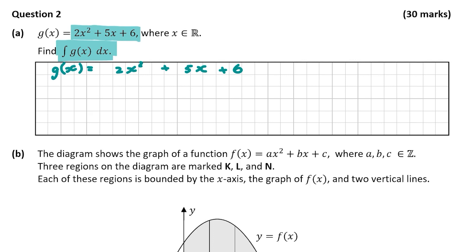So to integrate this, I'm going to draw the integration sign next to this. We're going to increase the power of the x's and then divide the whole term by the new power. So it's going to be 2x³ divided by 3, then 5x² divided by 2, then 6x, and then plus c. So the integral of g(x) is equal to this.